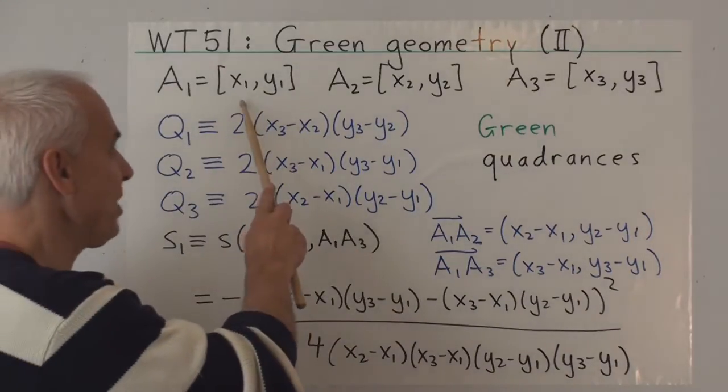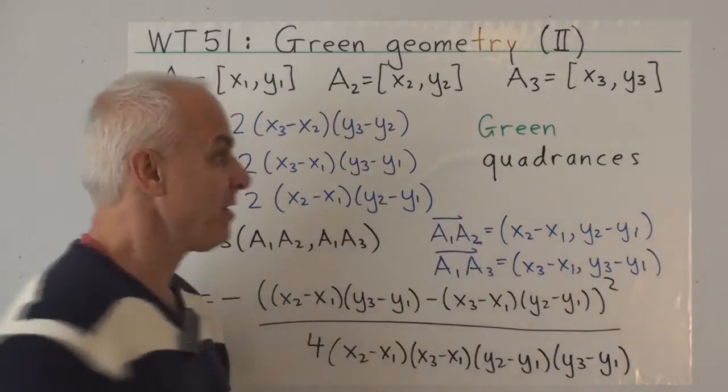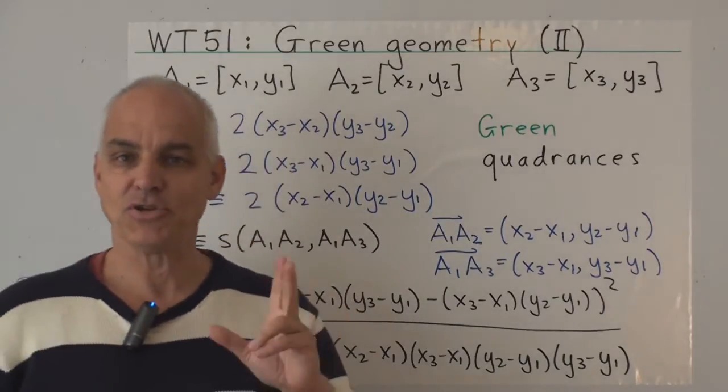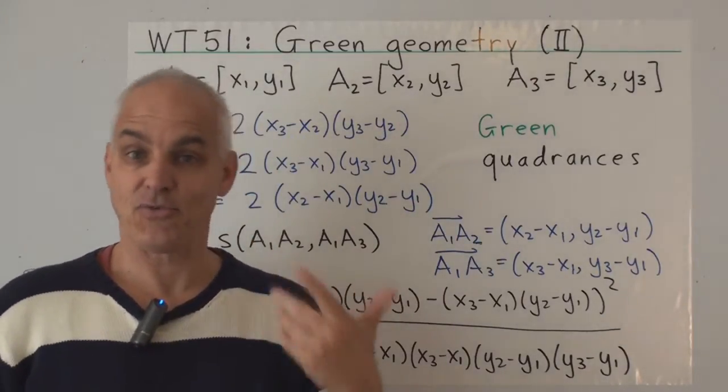So we have now three points A1, A2, A3, with the usual coordinates X1, Y1, and so on, and our aim is to do trigonometry in this green setting.